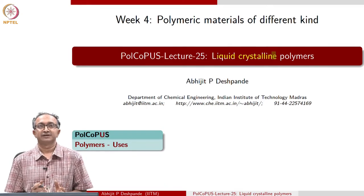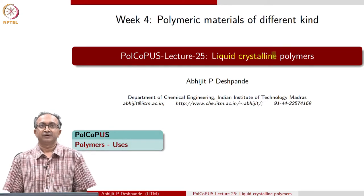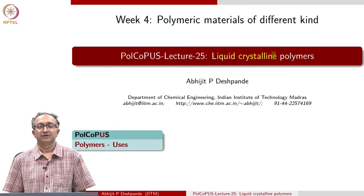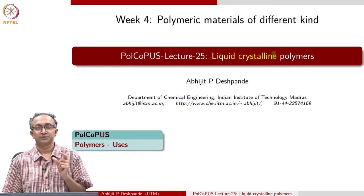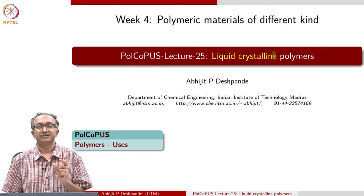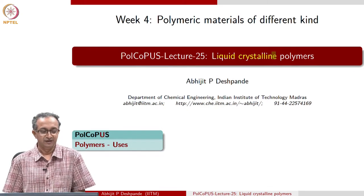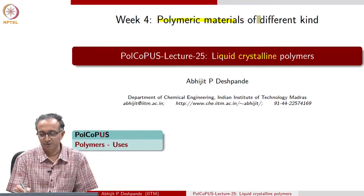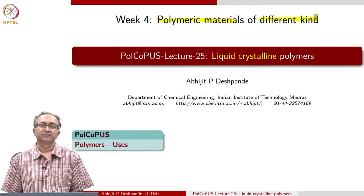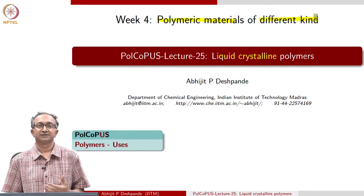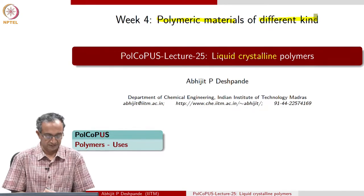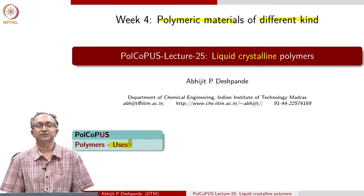In small molecules and in organic systems, liquid crystals are well known. But we also see that along the macromolecules, there can be small moieties or small segments which can have liquid crystalline order. Therefore, in polymers also we can have liquid crystallinity. Just to remind you that this week we are discussing polymer materials of different kinds - copolymers, blends, and composites - as we look at the use of polymeric material in all different applications. And in this lecture also, we will focus on some of the key uses of liquid crystalline polymers.